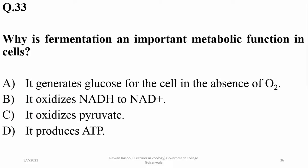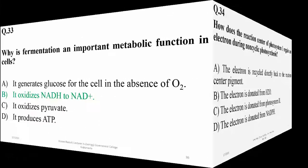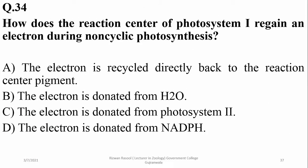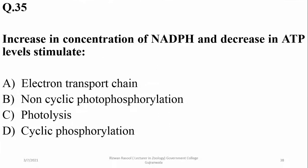Why is fermentation an important metabolic function in cells? Because it oxidizes NADH to NAD+ to regenerate NAD+ for the next reaction. How does the reaction center of photosystem 1 regain an electron during the Z scheme? Photosystem 1 gains this electron from water via photolysis.